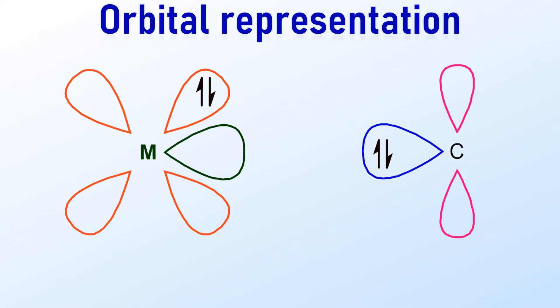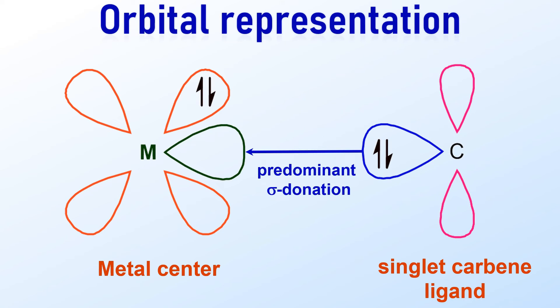This is the orbital representation of the sigma and pi bond formation between the metal center and the carbene carbon.